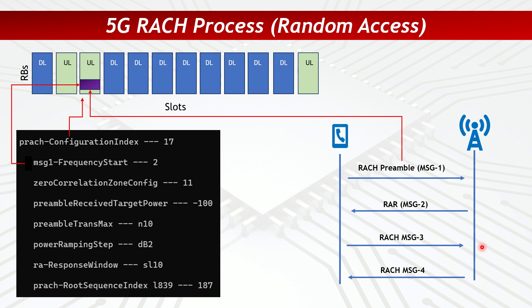The RACH success rate is given by Message 3 count divided by Message 2 count, or Message 3 divided by Message 1. Since Message 1 and Message 2 counts are nearly equal, both formulas give similar results. Message 4 rarely fails because it is a downlink message — once Message 3 is successfully decoded, Message 4 is typically successful. That is why the RACH success rate is counted at Message 3. If you have any questions, please let me know — I can cover RACH planning and further optimization in a later session. Have a nice day!